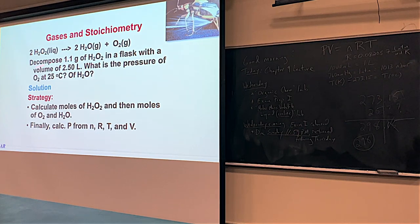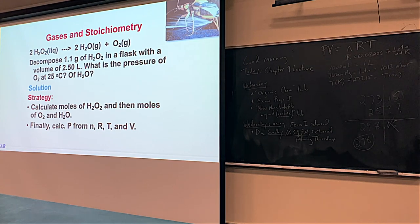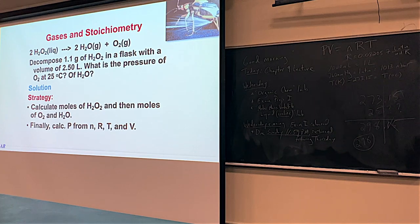We're going to use 25 degrees Celsius a lot because that's room temperature. 25 plus 273 equals 298 Kelvin. If you see 25 Celsius, that just means 298 Kelvin.